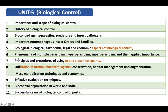The sixth topic covers the phenomena of multiple parasitism, hyper-parasitism, and super-parasitism. Multiple parasitism means different types of parasites attack the same host. Hyper-parasitism means a parasitoid attacks another parasitoid. Super-parasitism means different numbers of parasitoids belonging to the same species attack the same host. You need to know their applied importance and relevant examples.